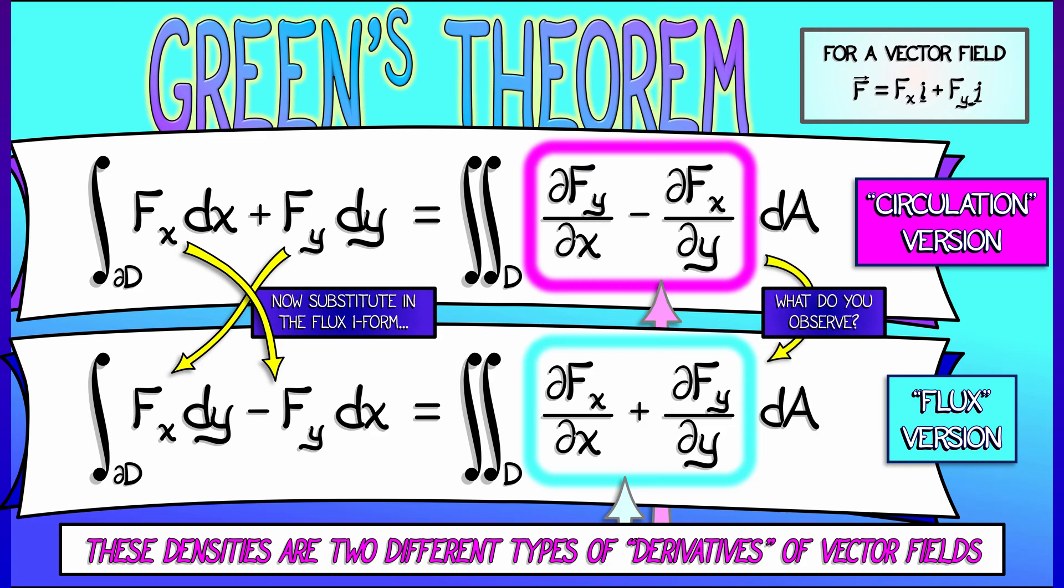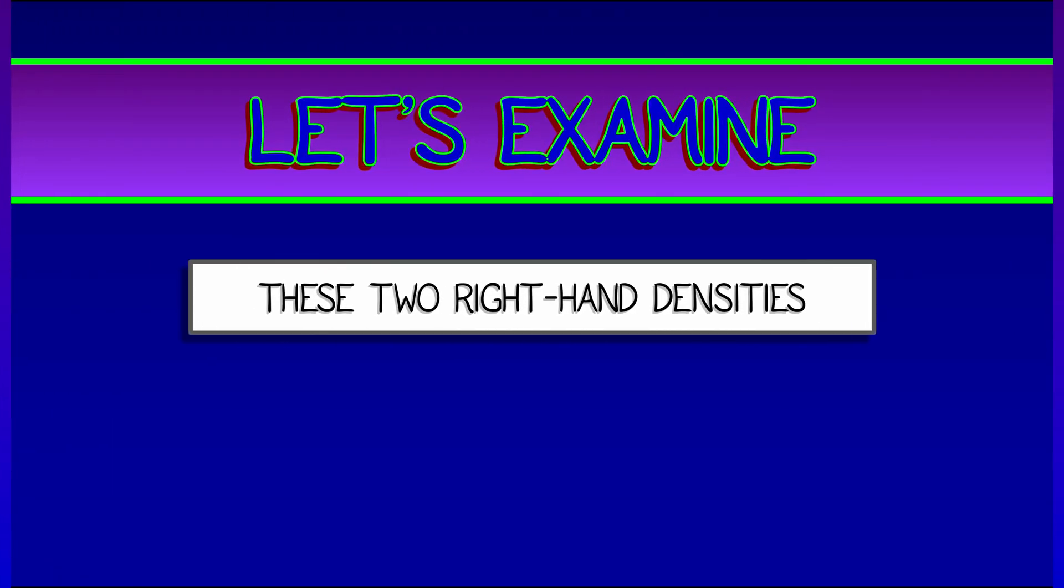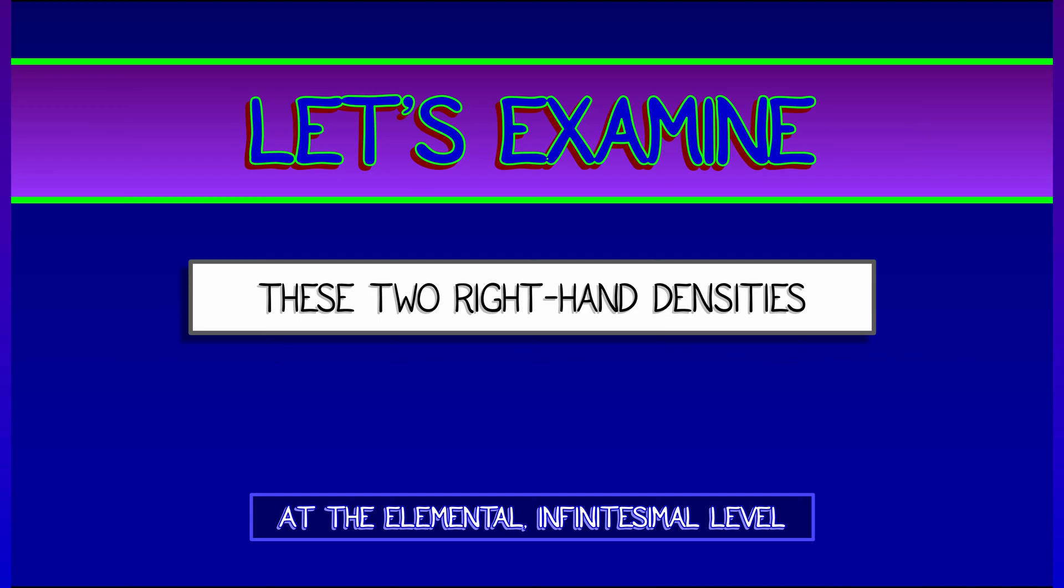Well, they're kind of similar, but they're kind of different. They're kind of twisted. It's like you're flipping an x and a y, and there's a minus sign change. What does it all mean? Well, let's take a look. Let's examine these two right-hand densities at the elemental or infinitesimal level. And let's think about what they mean.